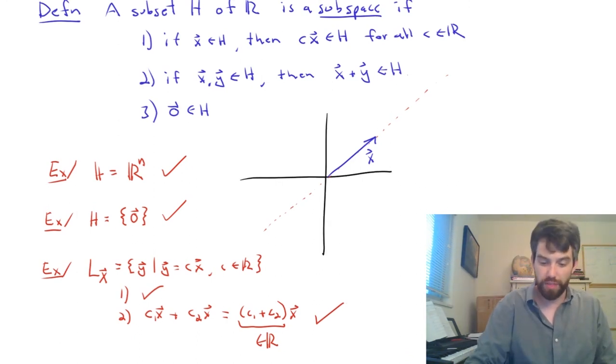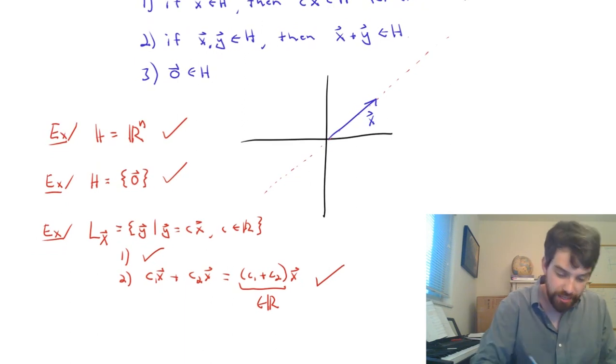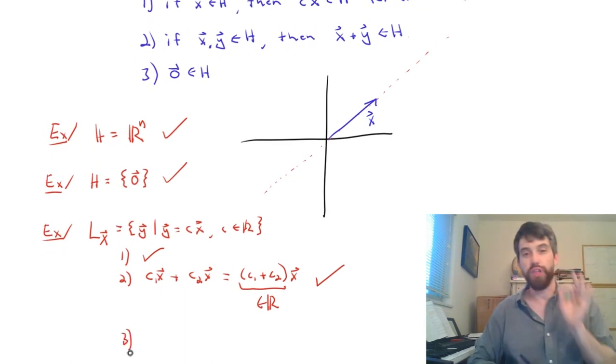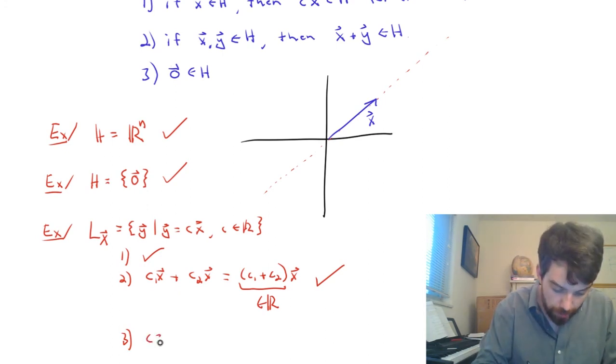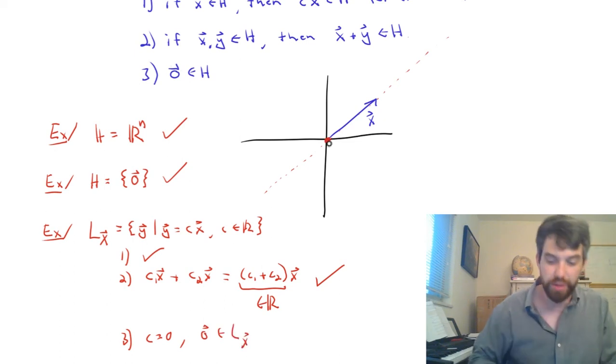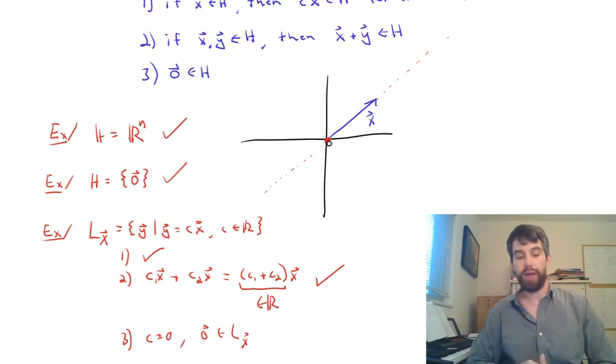And then the very final thing that we have to verify is that, indeed, the origin is there. And if you just choose C equal to zero, then what you're going to get is that the zero vector is an element of the line through X. Indeed, you can sort of imagine it being right there. This is the line through X.